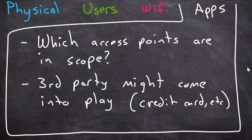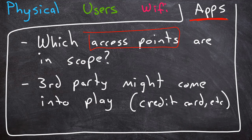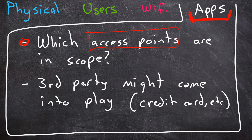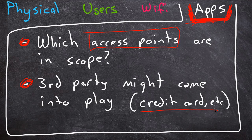Lastly, let's talk about applications. Which access points to the data are in scope? If there's a mobile app the company uses, are you supposed to test that app for security? That's going to require more work to get a hold of the app and look at it. Are you supposed to look at the code or just sniff the packets it uses when it connects? It's important to note that this is a place where third party authorizations might come into play, not only because apps are likely hosted on cloud services, but also because of credit card processing plugins and similar integrations. There may be data you're not allowed to access, so know that in advance.